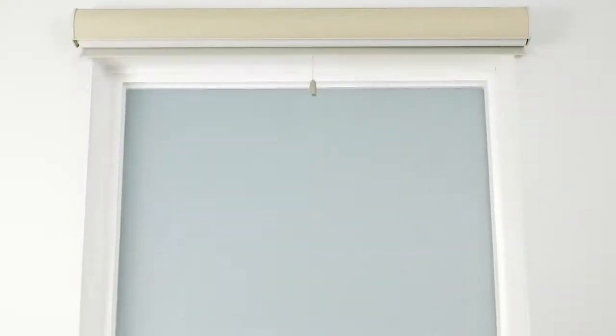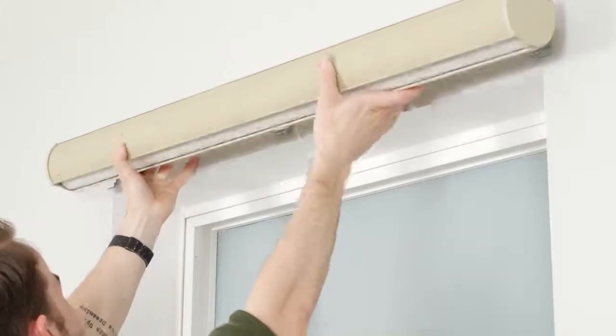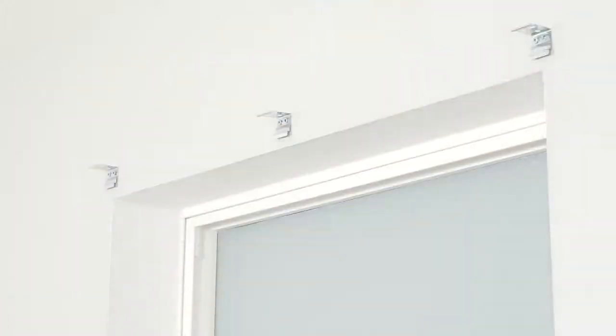If you need to remove your shade, raise it fully into the cassette first. Reach up under it and press on the back of the bracket, which acts as a release tab. Lift the cassette off the brackets and out of the window.